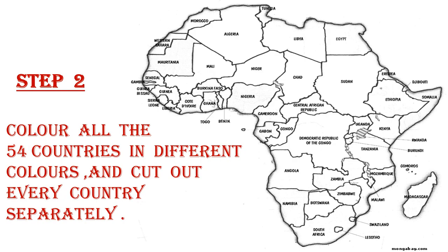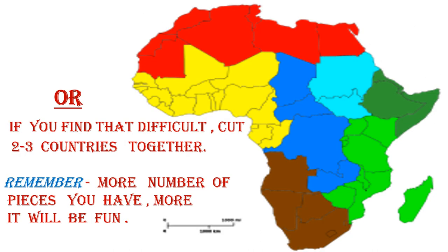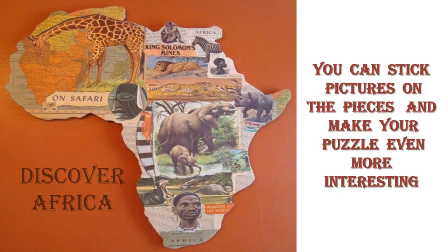Step two: color all the African countries in different shades and cut them out very carefully. You can take help from your parents. Collect all the countries in one box — remember, even if you lose one piece of the puzzle, your entire effort is wasted. If you wish, you can name the countries so that while assembling you also remember their location. If you have difficulty cutting the outlines of small countries, you can combine two countries together and cut.